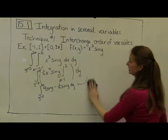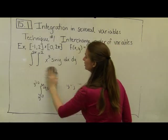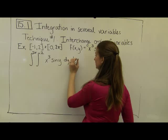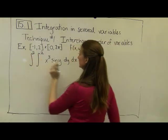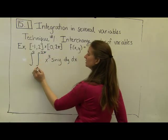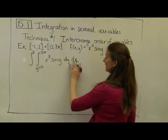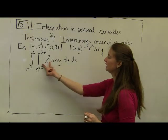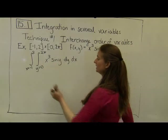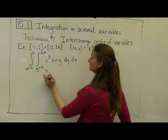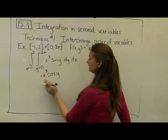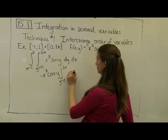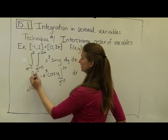Now let's interchange the order of integration and see what we come up with a second time. Instead of having x on the interior, I'm going to flip it around and make this dy dx. We know we can do this because of Fubini's theorem. So my dy is on the interior, meaning my bounds of y are on the interior — y goes from zero to two pi. The x is on the exterior, with x values going from negative one to two. Now I integrate with respect to y first, treating x³ as a constant. The integral of sine is negative cosine, so this becomes negative cosine of y, evaluated as y goes from zero to two pi.